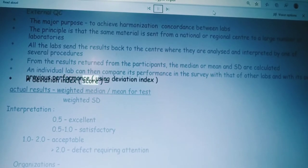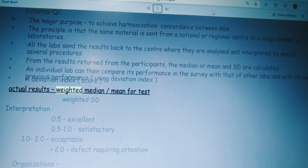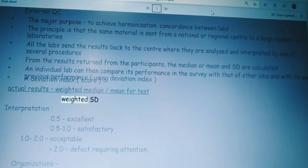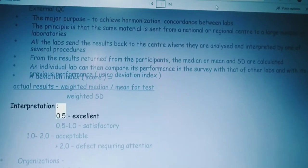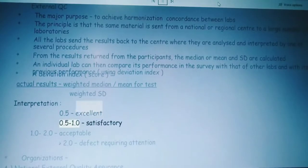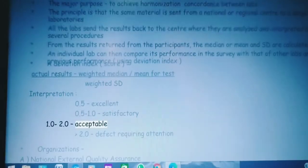A deviation index score equals actual results minus weighted median or mean for test divided by weighted SD. Interpretation: 0.5, excellent; 0.5 to 1.0, satisfactory; 1.0 to 2.0, acceptable; greater than 2.0, defect requiring attention.